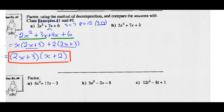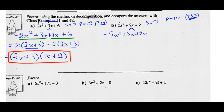So, step 1: ask yourself what two numbers have a sum of the middle term, 7, and a product of the first times the last — 2 times 5 is 10. What numbers add to 7 and multiply to 10? Those numbers are 5 and 2. We're going to use 5 and 2 to decompose the middle term. Keep the first term, 5X squared, and rewrite 7X using these two numbers — plus 5X plus 2X — which is the same as 7X. Then keep the last term of 2.